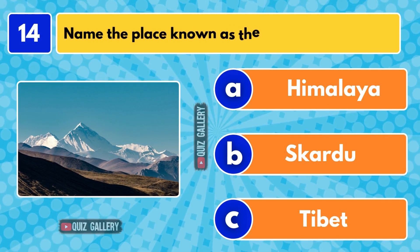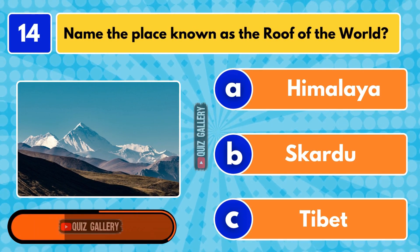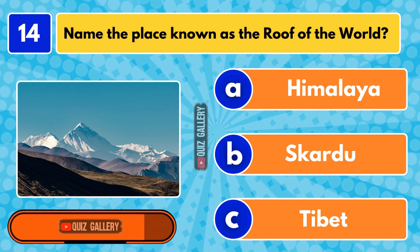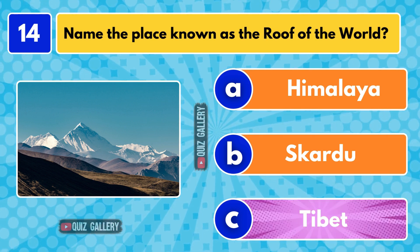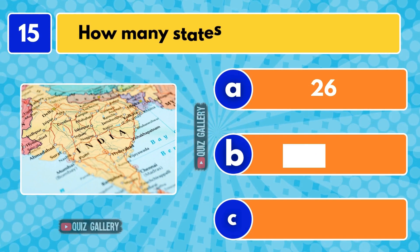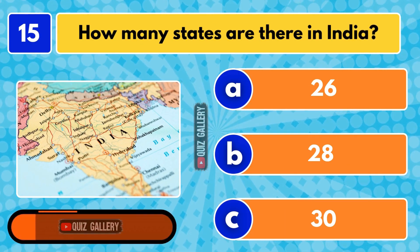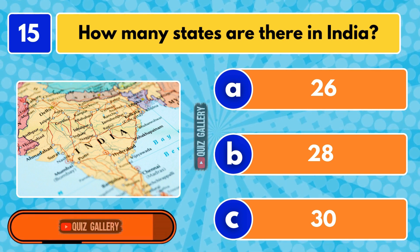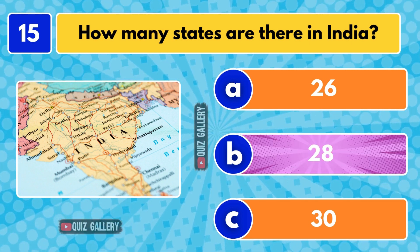Name the place known as the roof of the world. Tibet. How many states are there in India? 28 states.